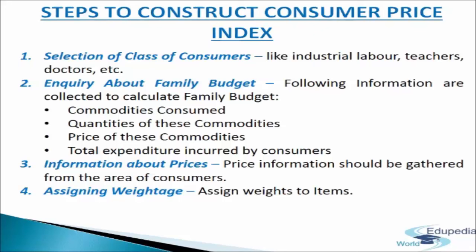The next step is inquiry about the family budget. A family budget inquiry is conducted by randomly selecting a sample of representative families from the class of people for whom the index is designed. The inquiry should be conducted in a normal period of economic stability. It helps in finding out how much an average family spends on different items of consumption. Commodities are broadly classified into five major groups: food, clothing, fuel and lighting, house rent, and miscellaneous.